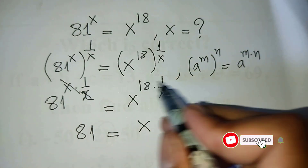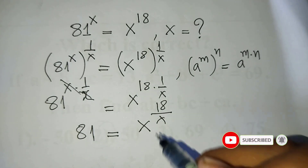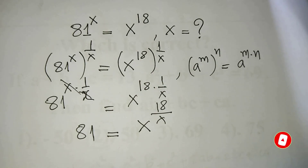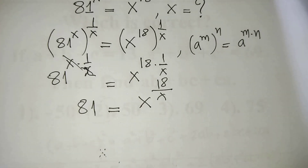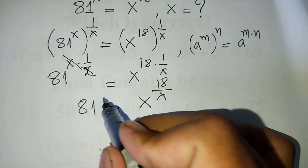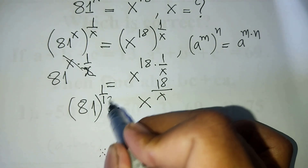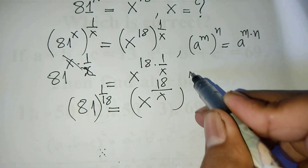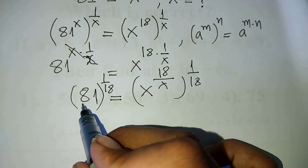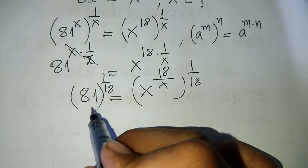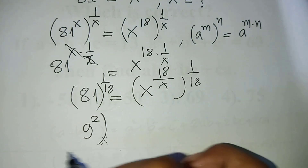Simplified, we get 81 = a^(18/8). Then we raise both sides of this equation to the power 1/18. Now 81 = 9 squared, so it equals (9²)^(1/18).